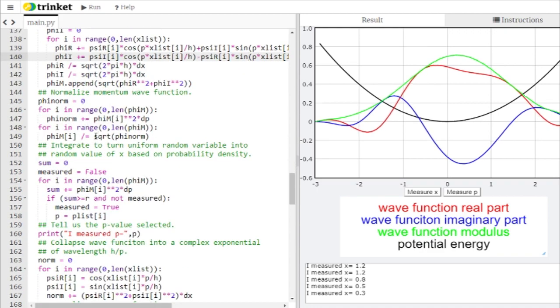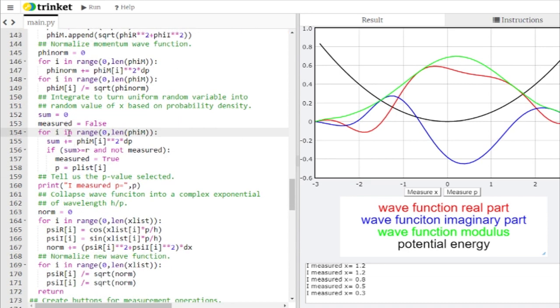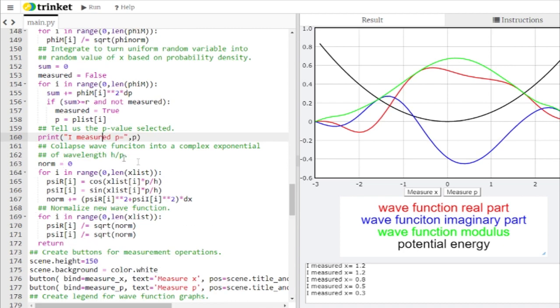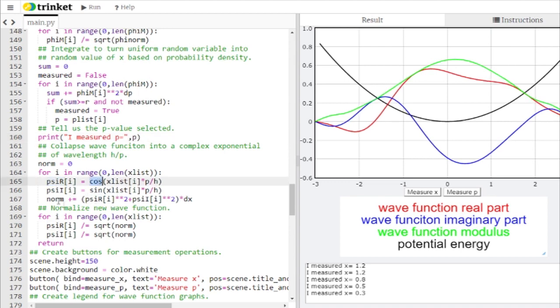So anyway, I end up with this phi function that is my probability distribution for the momentum. The way this ends up working is the same way that we did before for the position random selection. We need to set up this sum here. We're going to sum over phi now instead of psi. And basically, as soon as our sum exceeds this random variable, this previously selected random number, then we can assign that as the momentum. So it'll tell us I measured the momentum to be whatever value we randomly selected. And then down here, I need to collapse the wave function. Only this time, instead of collapsing to a Dirac delta function, it needs to collapse to a complex exponential. And so what I see here is that my psi real is going to become a cosine and my psi imaginary is going to become a sine because that's what a complex exponential is. It's cosine plus i times the sine.